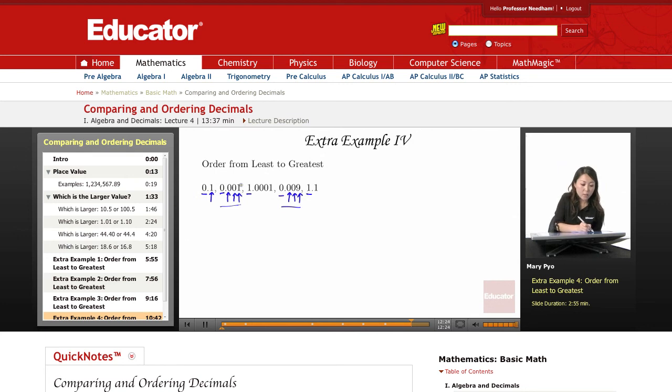Okay, well, one is smaller than nine. So then this is smaller than that number. So that's going to make it the smallest number, 0.001.